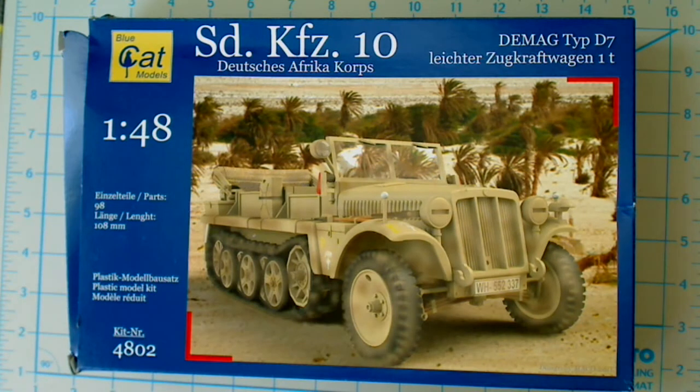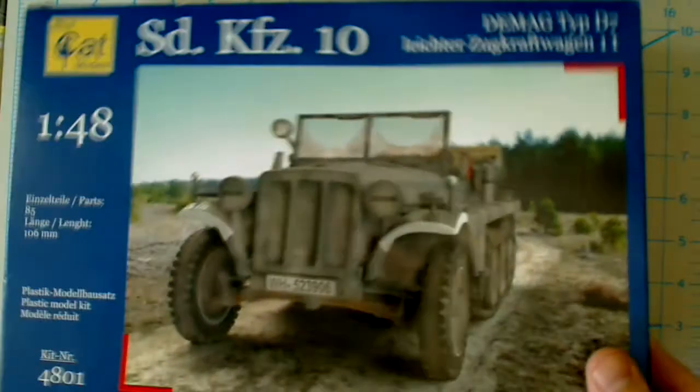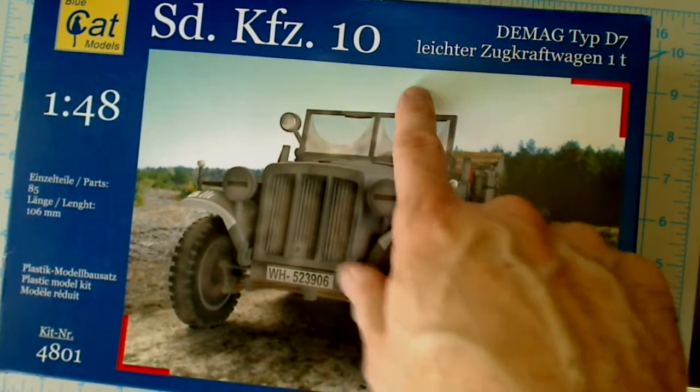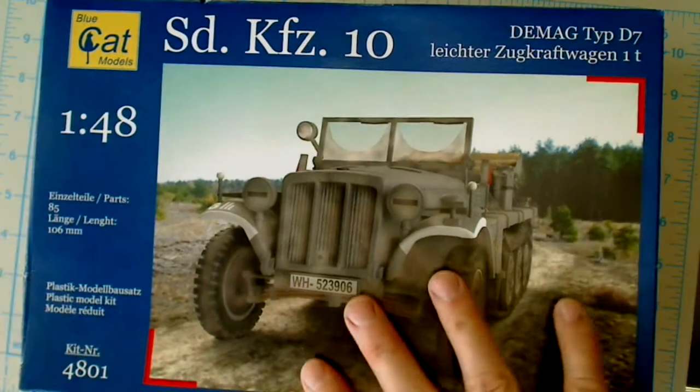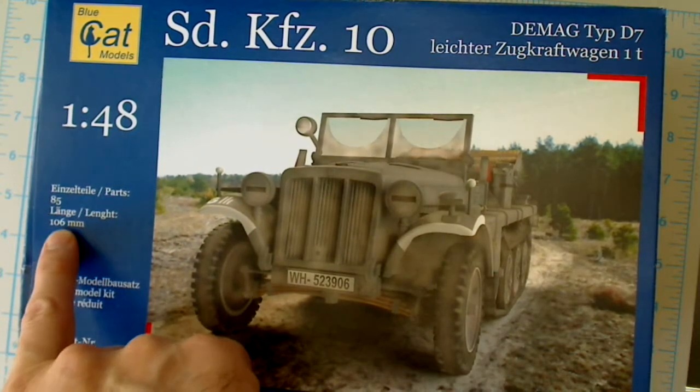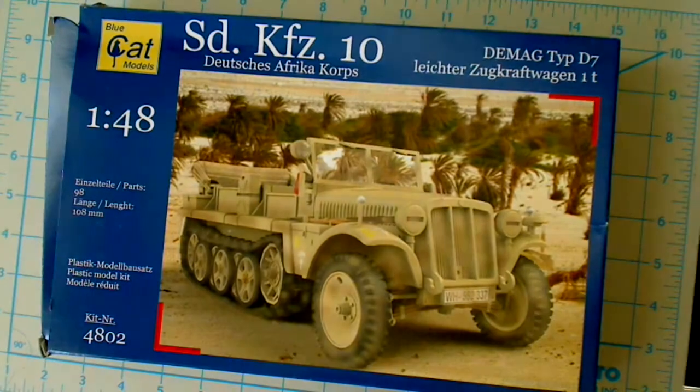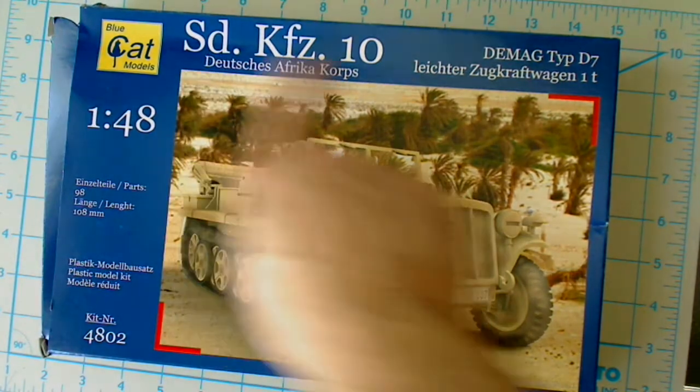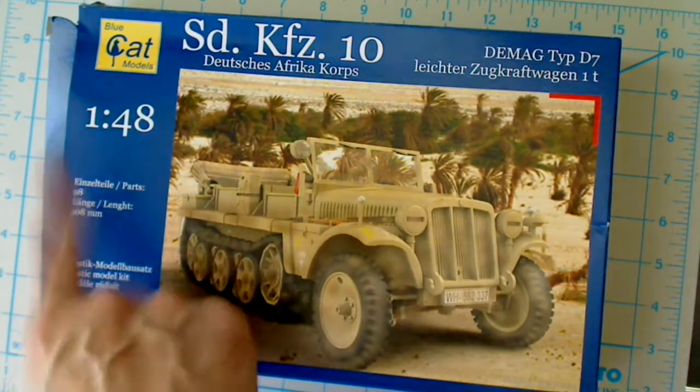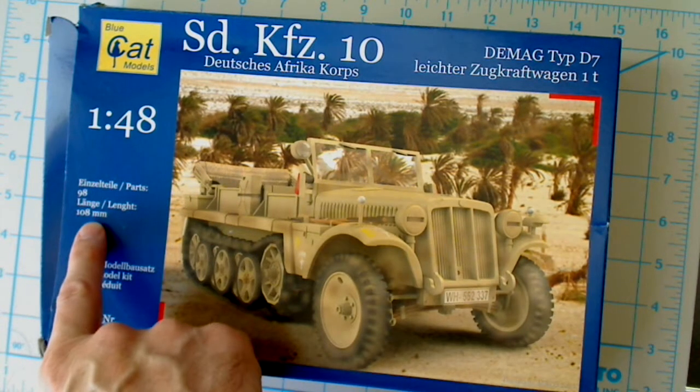The first release was this one, the SD-KFC-10 D-Mag Type D7 Leisure Zulfkrafwagen 1T with 1:48 scale, 85 parts and 106 millimeters in length. Now the second kit is what appears to be the same model, but in a Deutsche Afrika Korps version, with 98 parts and 108 millimeters in length.